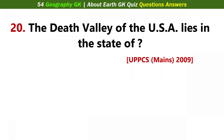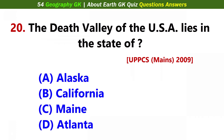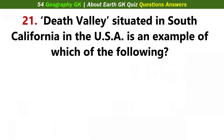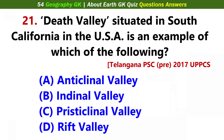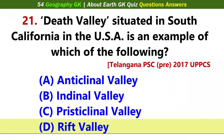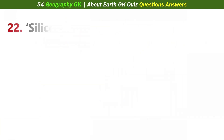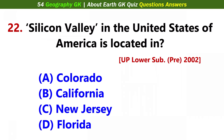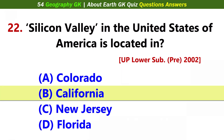The Death Valley of the USA lies in the state of... Answer B: California. Death Valley situated in South California in the USA is an example of which of the following? Answer D: Rift Valley. Silicon Valley in the United States of America is located in... Answer B: California.